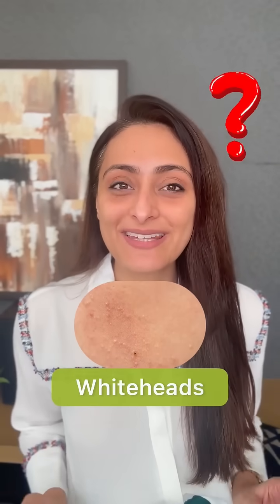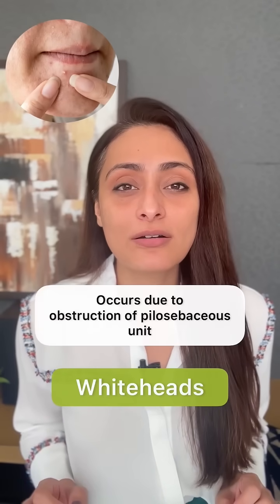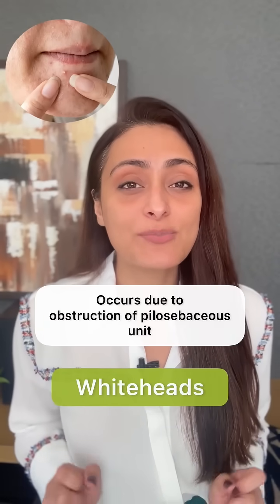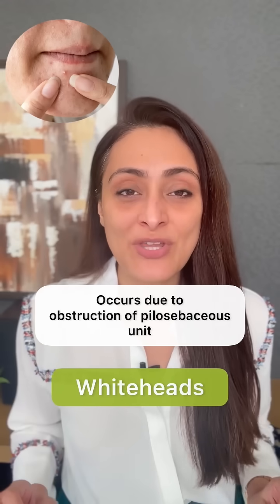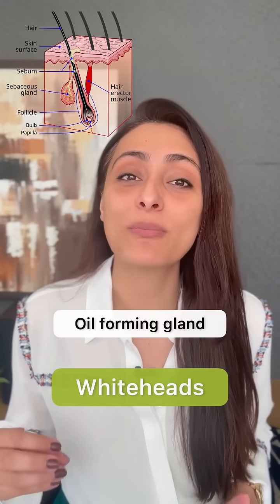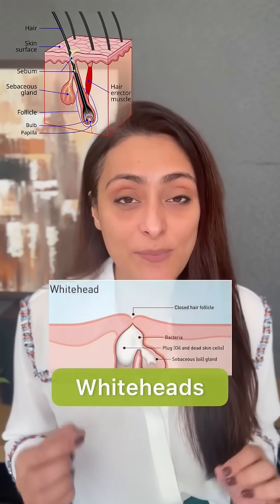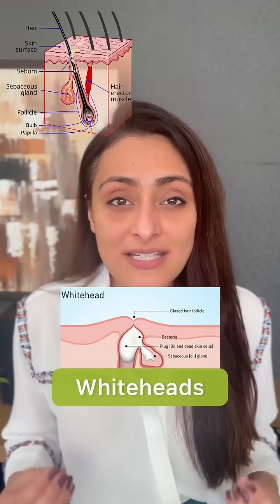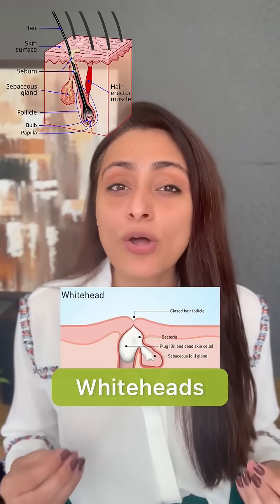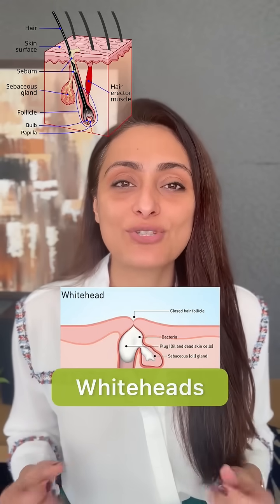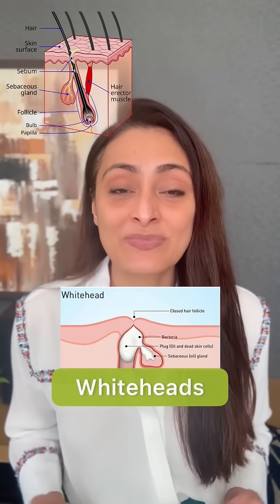Whiteheads: what are they and how can we treat them? Whiteheads are small white bumps seen on the face. They occur when there is obstruction of the pilosebaceous unit. There are multiple hairs on our face, and next to each there is an oil-forming gland. When the passage of this gland gets obstructed with either skin debris or oil, that can lead to the formation of whiteheads.